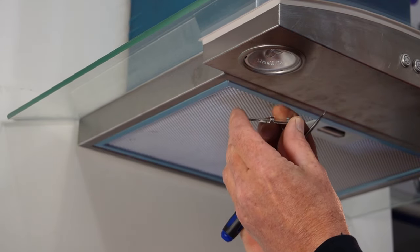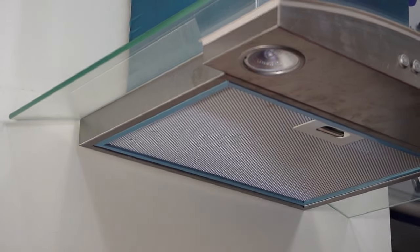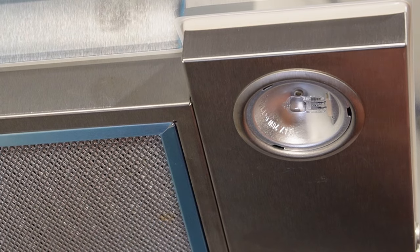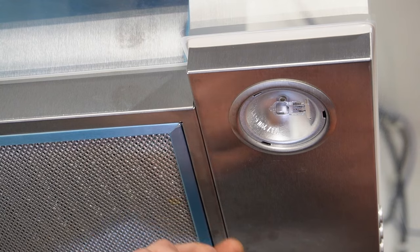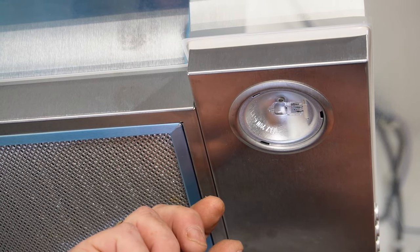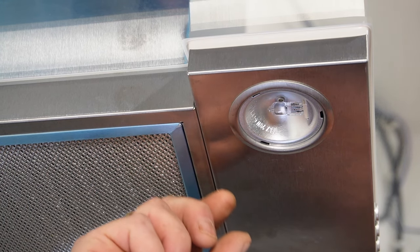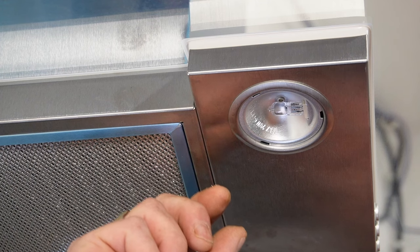Once you've removed the glass you will be able to get access to the bulb. Before replacing the bulb or taking the bulb out, do make sure you disconnect the appliance from the electricity supply as if you create a short you could damage the printed circuit board or the transformer.